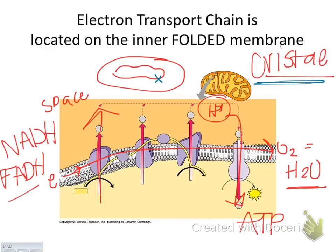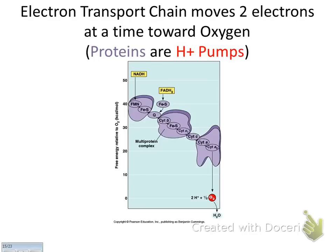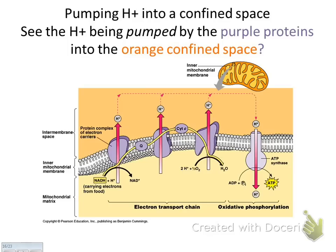The electron transport chain is always in a membrane — for bacteria, it's actually in the cell membrane, which is really cool. The whole process is controlled by the release of energy. Electrons move two at a time down toward oxygen, because that makes H2O.